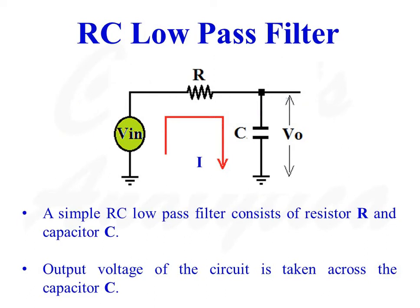This is the circuit diagram of a simple RC low-pass filter. A simple RC low-pass filter consists of resistor R and capacitor C. The output voltage of the circuit is taken across the capacitance C, so output voltage V0 is equal to the voltage across the capacitor.